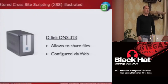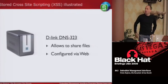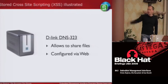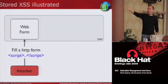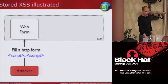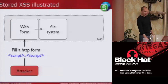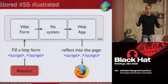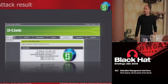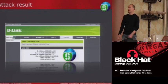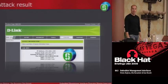Let me give you an example on one of the devices we tested — a D-Link DNS device used to share data, which of course has a web interface. What happens is instead of putting the name of a file or device, you put a script in the form. It is stored, and of course it is reflected to the browser of the administrator, and the browser executes it. That's the basic one everyone knows. And if you do it in real life, you end up injecting our nice logo into the D-Link embedded device.